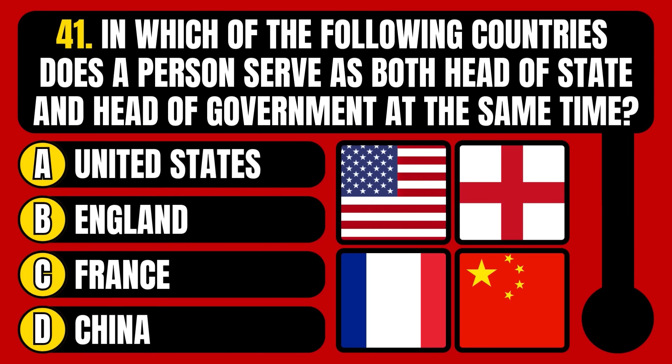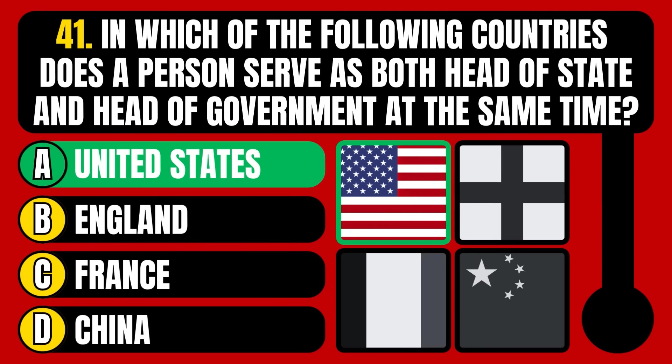In which of the following countries does a person serve as both head of state and head of government at the same time? United States, England, France, or China? The correct answer is option A, United States.